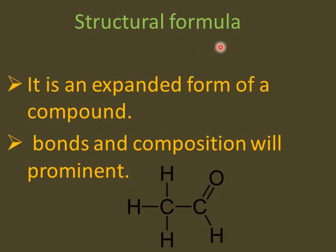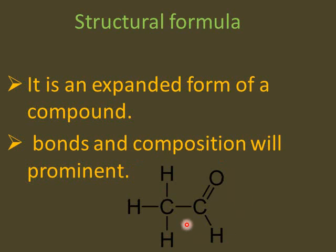Now, this is the structural formula. If we know the structural formula, it will be very easy for us to understand in how many other forms it can be arranged. It is an expanded form of a compound — bonds and composition both will be prominent in structural formula. Like in this case, we can easily understand that we have two carbons: one carbon is attached with three hydrogens, while the other carbon is attached with oxygen and hydrogen. This carbon is also known as the famous functional group aldehyde.